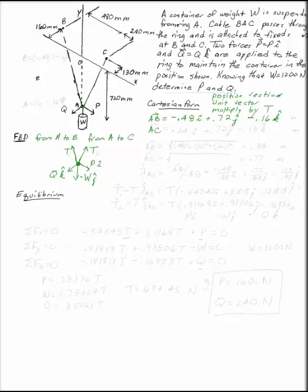The position vector from A to C is 0.24 in the i direction plus 0.72 in the j direction minus 0.13 in the k direction.